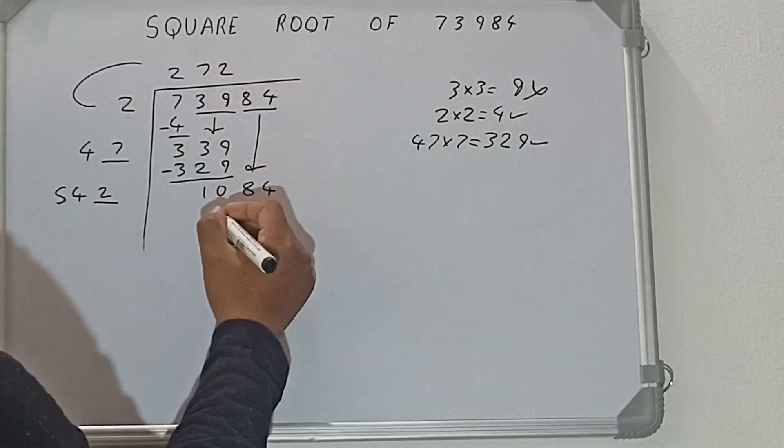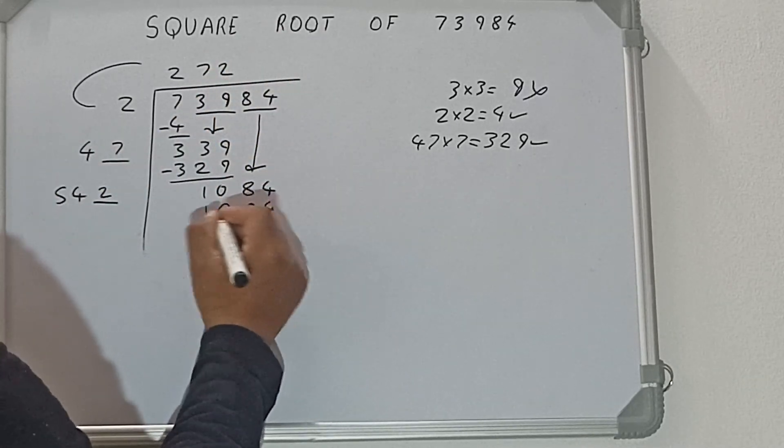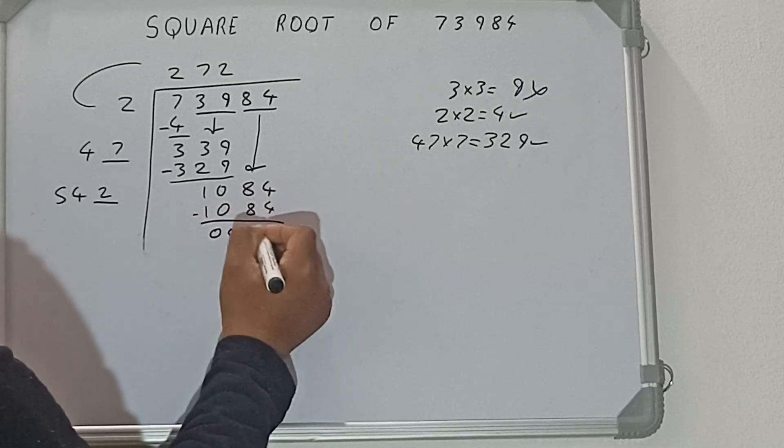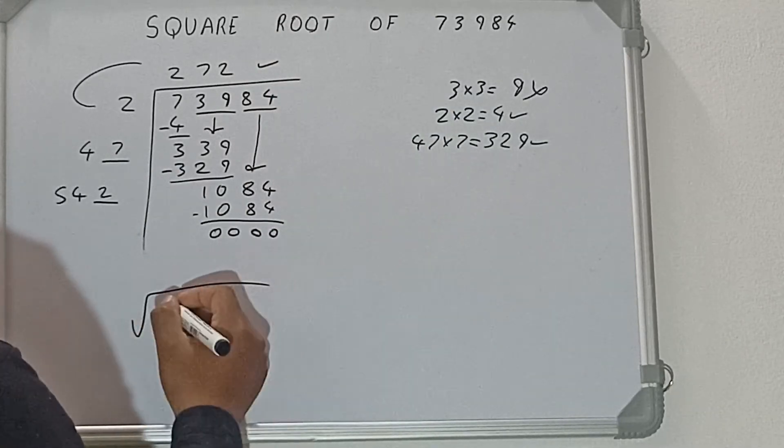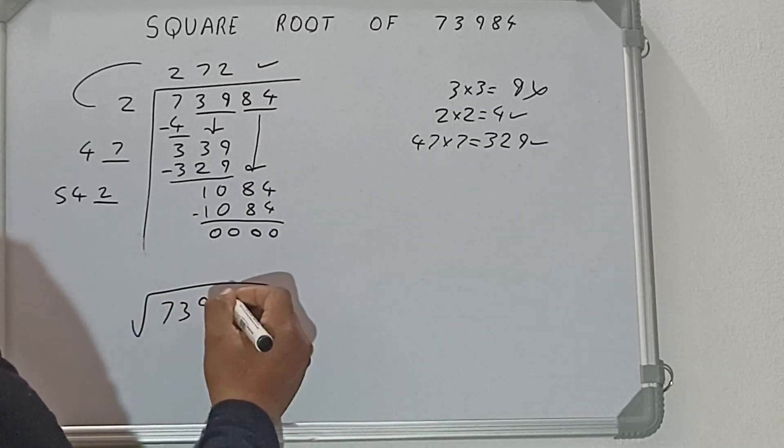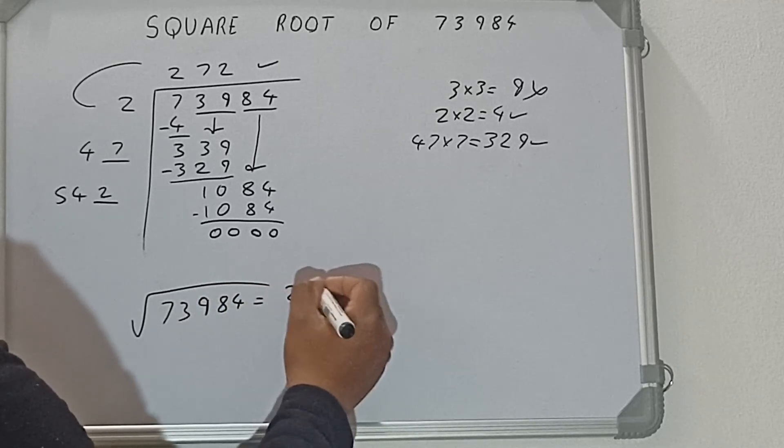2 here and 2 here, it will be 1084, subtract, zero will be left. Once we get zero the answer will be in the quotient, that is 272. So the square root of 73984 will be 272.